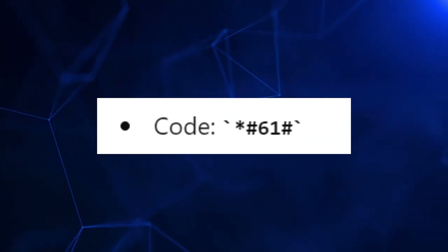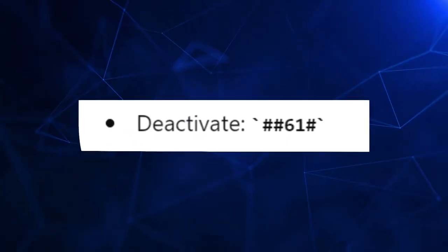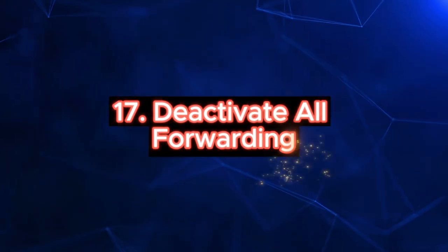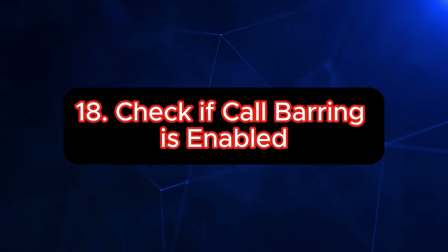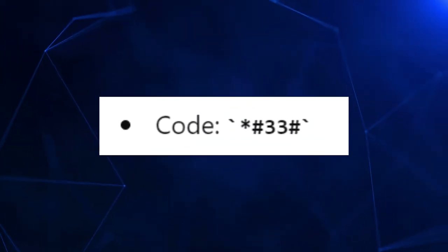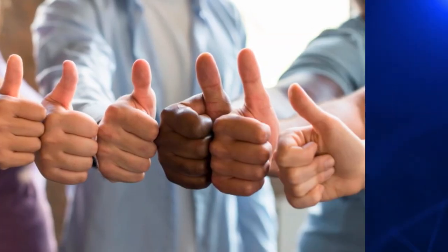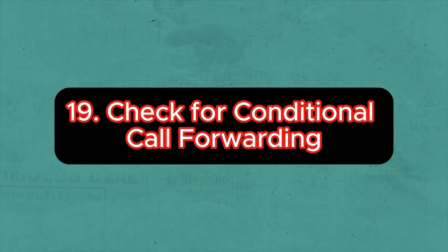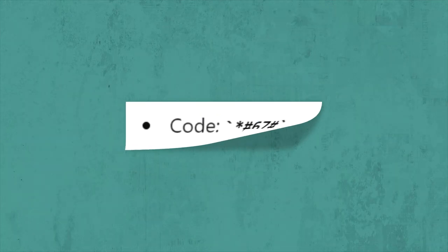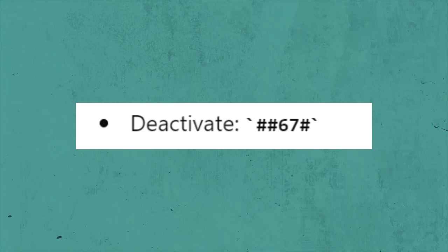To check if any redirection is set, press *#61# and to deactivate it press ##61#. To deactivate all call and data forwarding settings, press ##004#. To check if call barring is enabled, press *#33# and to deactivate it press #33*PIN#.